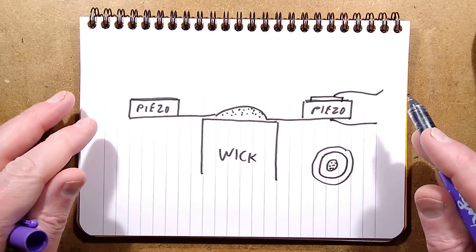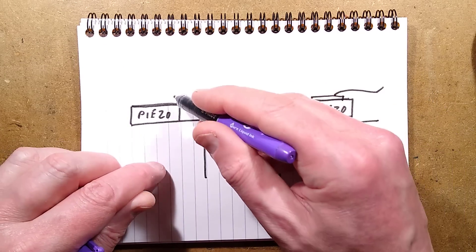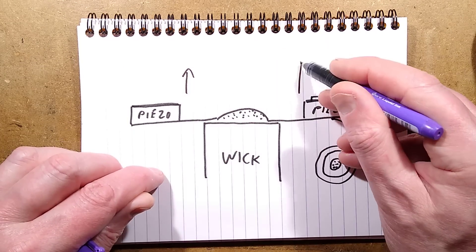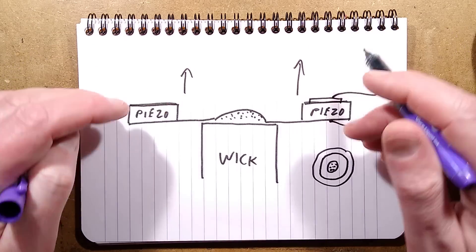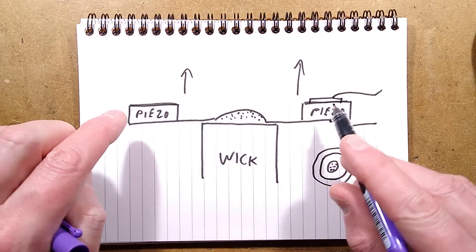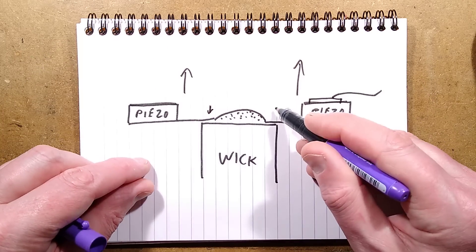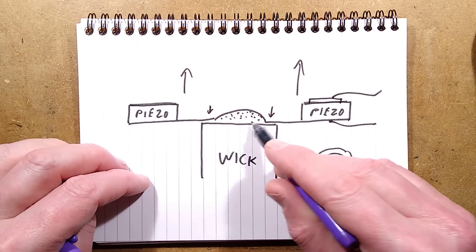When you put the aroma cartridge in, this is actually pushed up slightly because there's a spring and a spacer pushing down to protect the surface of the crystal and also to provide the correct pressure. So as you put it in, it pushes up against the spring and it puts a suitable pressure against the top of the wick. The wick delivers the liquid.